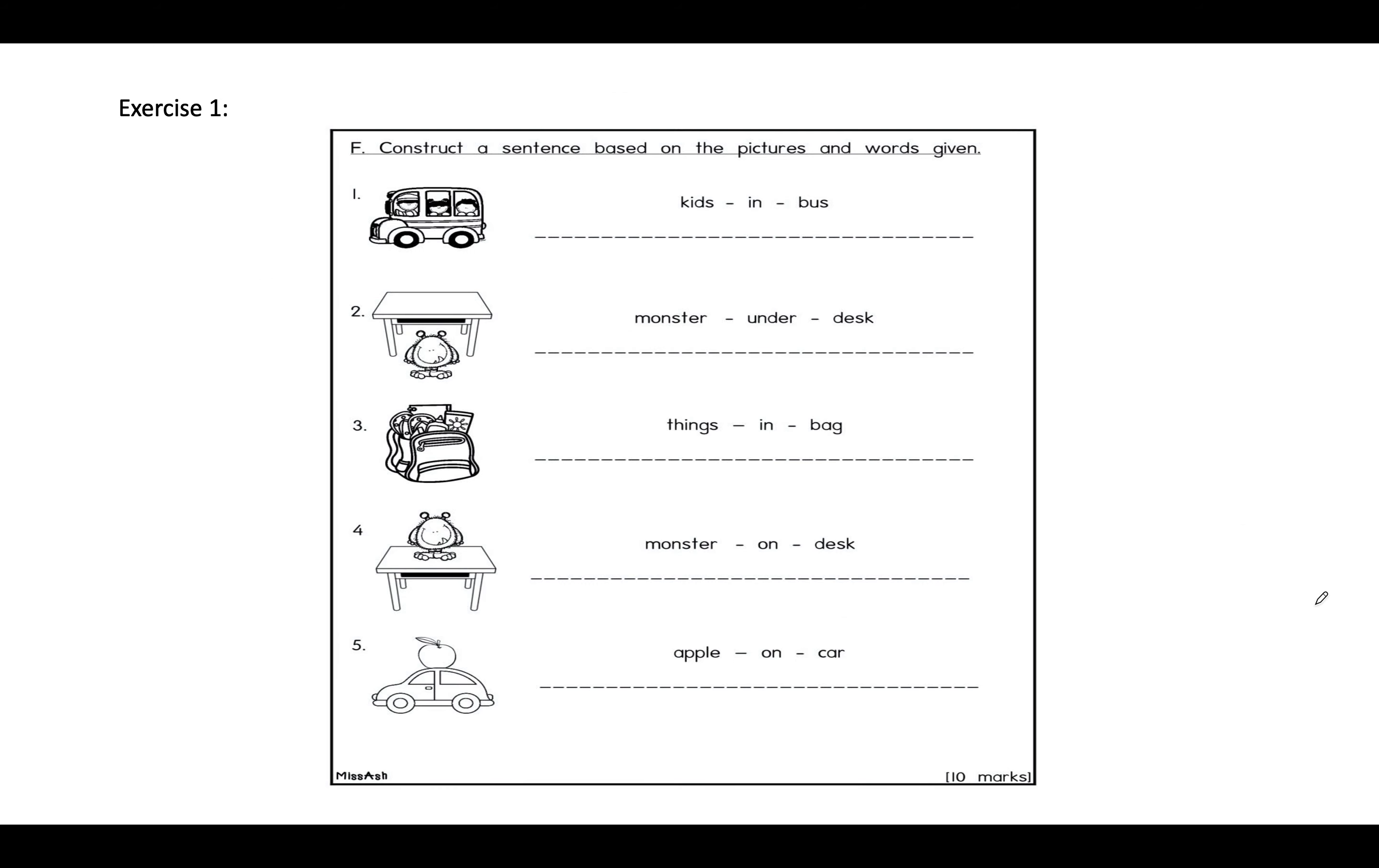Exercise number one: Construct a sentence based on the pictures and words given. You have to write down the sentence based on the pictures and the words given here. 你们要看了这个图片呢，要针对这里给的字做造句。Example number one: Kids in bus. How are we going to create a sentence based on the pictures and the words?